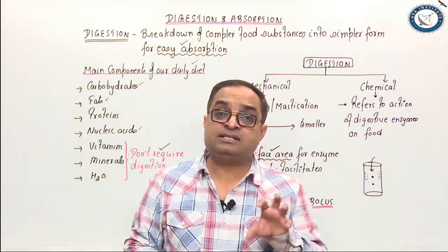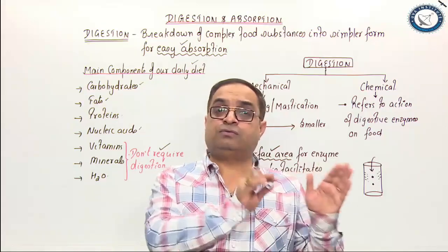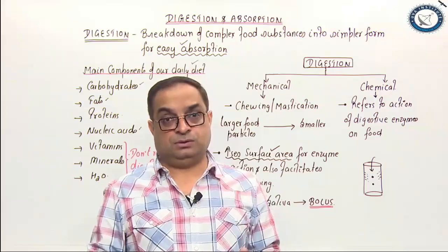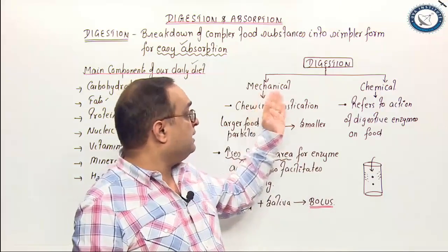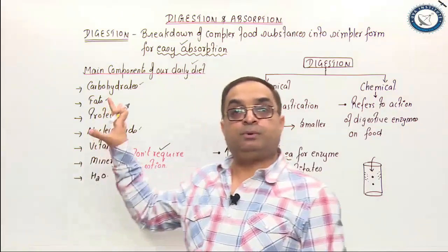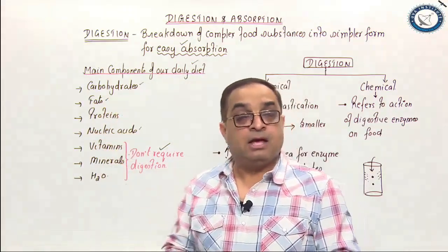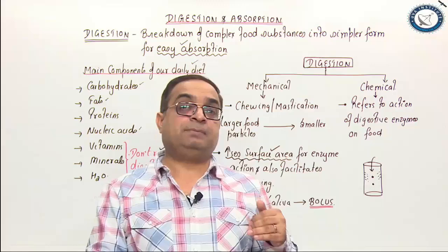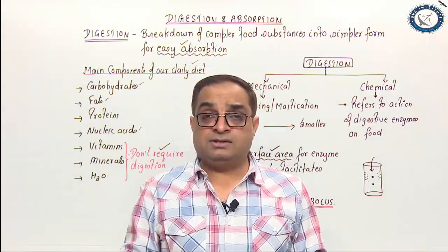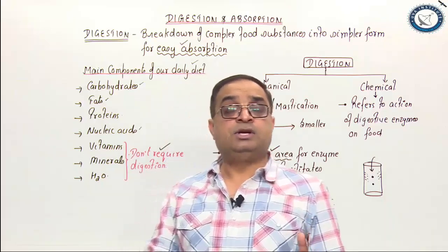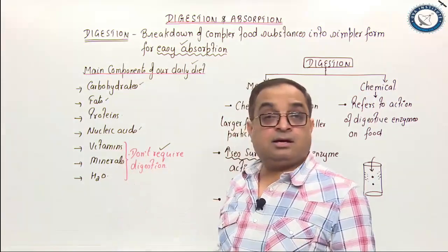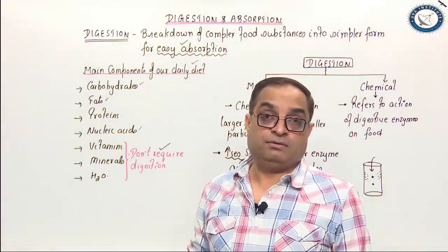To summarize: digestion is the breakdown of complex food into simpler form. Digestion can be intracellular or extracellular. Digestion can be mechanical or chemical. The main components of our daily diet include carbohydrates, proteins, and fats — which are called the proximate principles of food — plus vitamins, minerals, and water, which are called the protective principles of food.